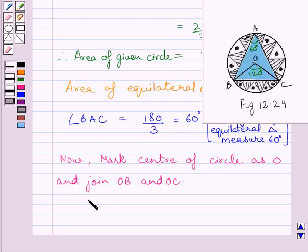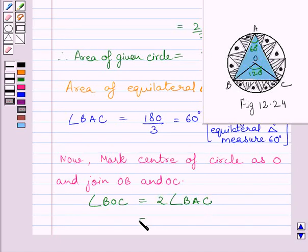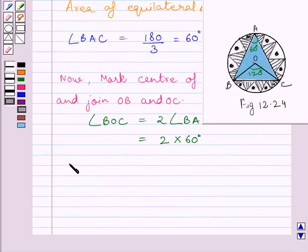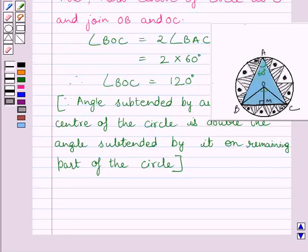So we can write angle BOC is equal to twice angle BAC. We know angle BAC is equal to 60 degrees, so this implies angle BOC is equal to 2 multiplied by 60 degrees. We get angle BOC is equal to 120 degrees.